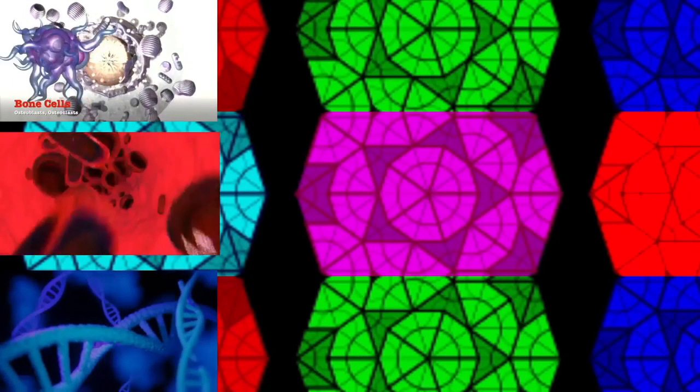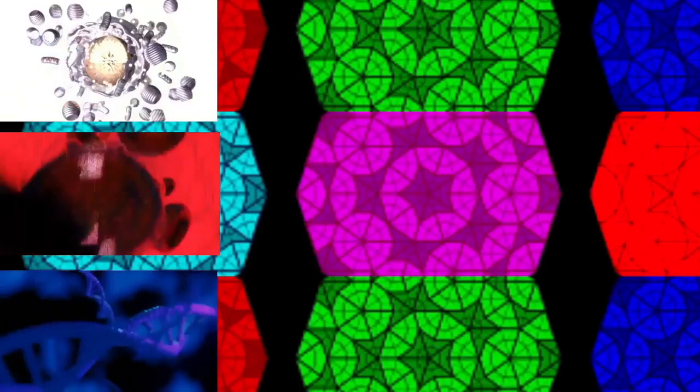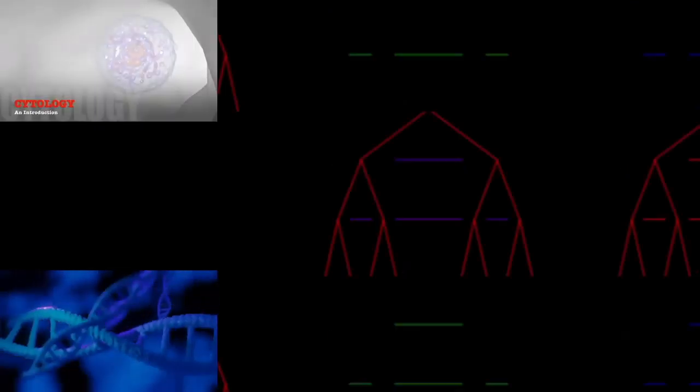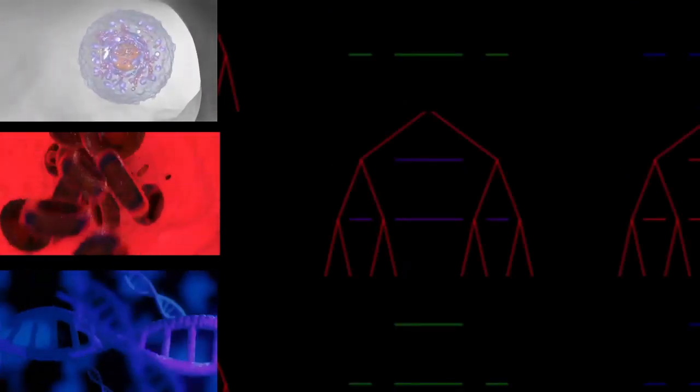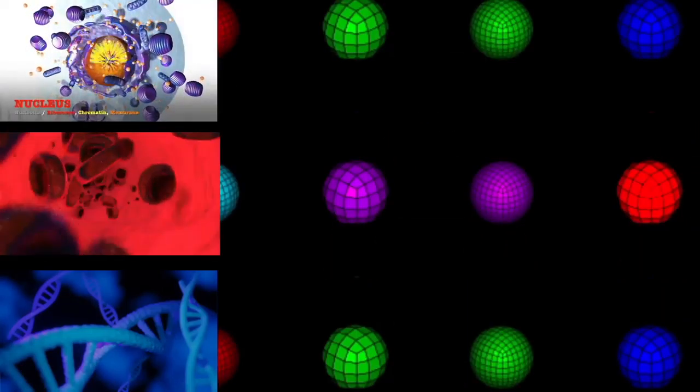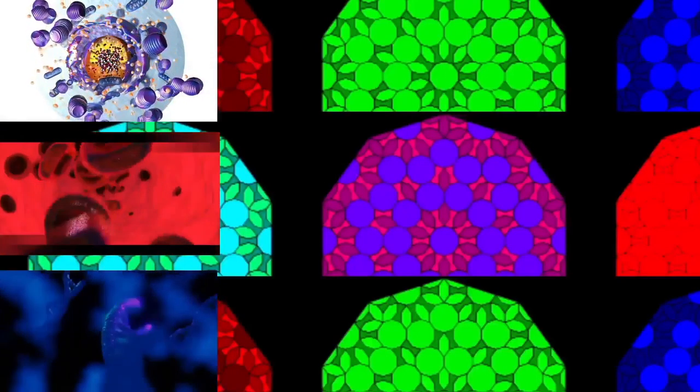Prokaryotes lack mitochondria and chloroplasts. Instead, processes such as oxidative phosphorylation and photosynthesis take place across the prokaryotic cell membrane. However, prokaryotes do possess some internal structures such as prokaryotic cytoskeletons.